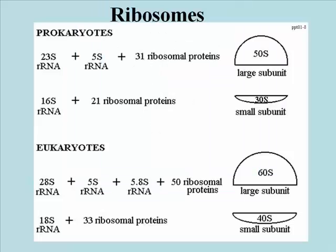Let's turn our attention now to ribosomes. This illustration summarizes what we know about them. They're composed of two subunits, a large one and a small one. Each subunit is composed of one or more ribosomal RNAs and 21 or more proteins.